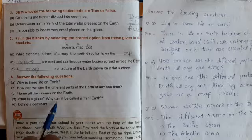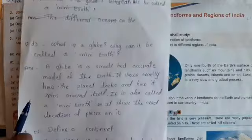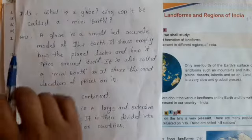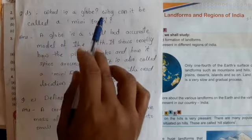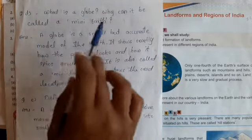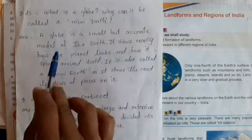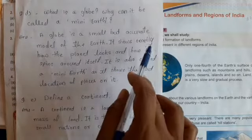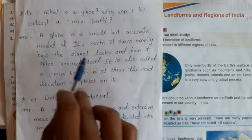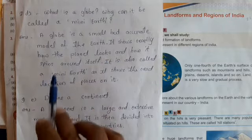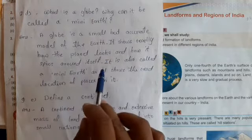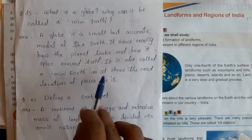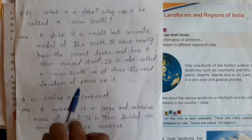Question D: What is a globe? Why can it be called a mini globe? A globe is a small but accurate model of the Earth. It shows exactly how the planet looks and how it spins around itself. It is also called a mini globe as it shows the exact location of places on it.